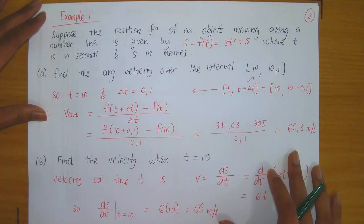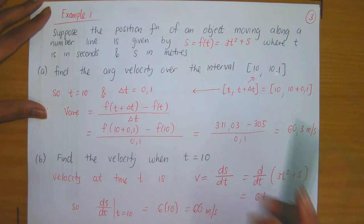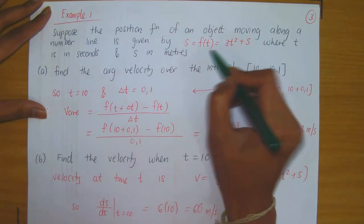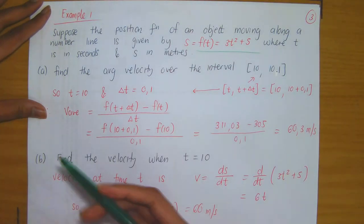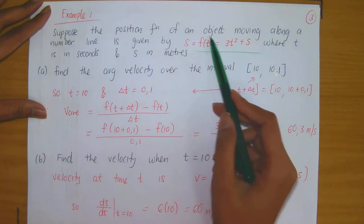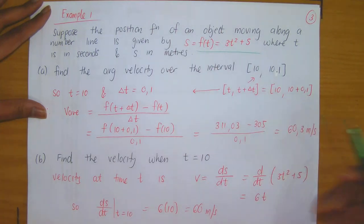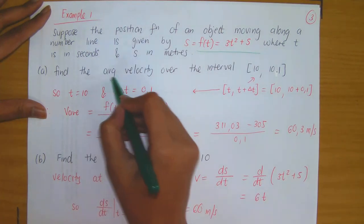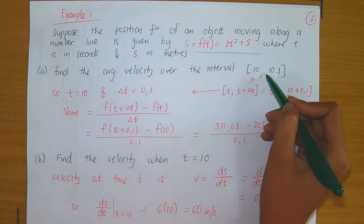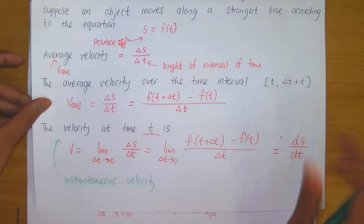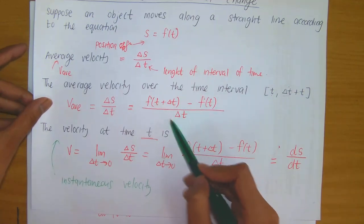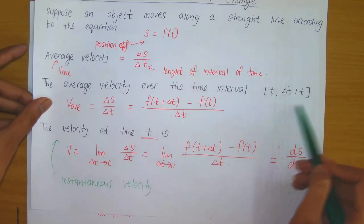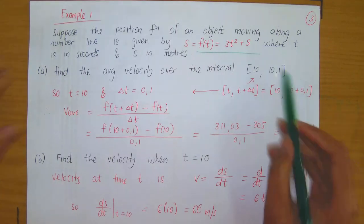A quick example from your notes: suppose we have a position function f of T equals 3T squared plus 5, where T denotes time in seconds and S equals f of T is denoted in meters. Find the average velocity over the interval. We have our formula for average velocity over an interval. It is important to note what delta T is, meaning what is the length of the interval. We're working with the interval 10 to 10.1.